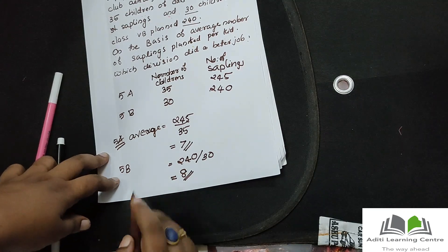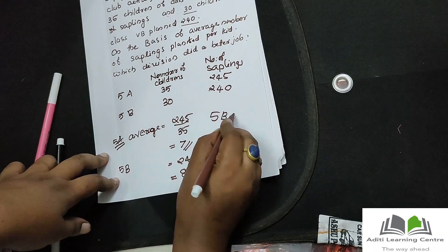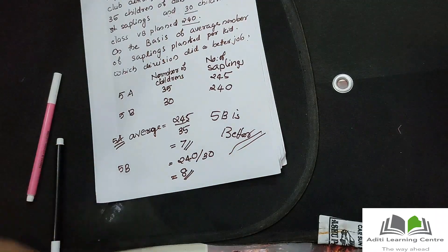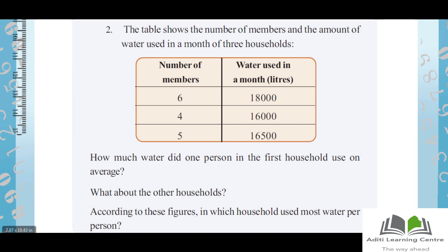The table shows the number of members and the amount of water used in the month for 3 households. The data is: 6 members and 18,000 litres, 4 members and 16,000 litres, 5 members and 16,500 litres. How much water did one person in the first household use on average? What about the other households? In which household was the most water used per person?